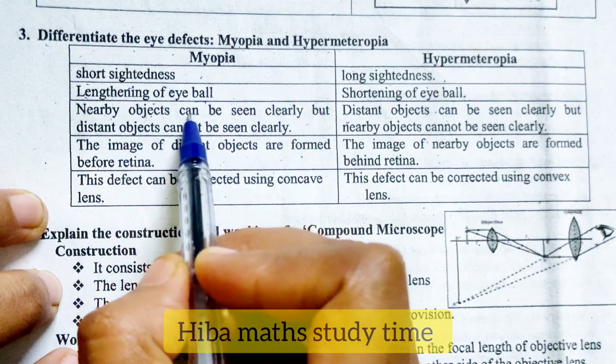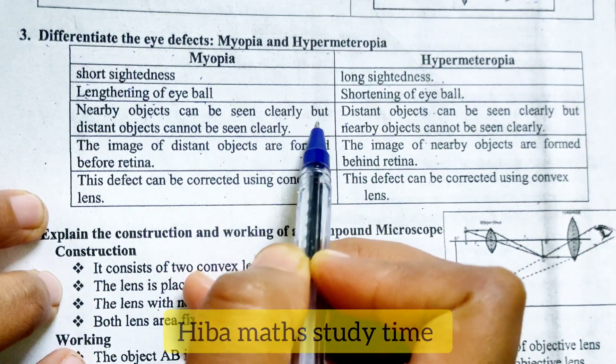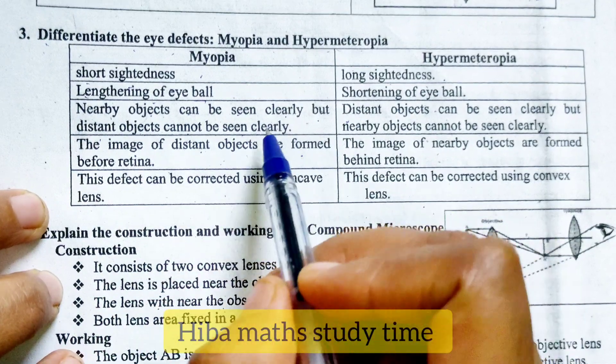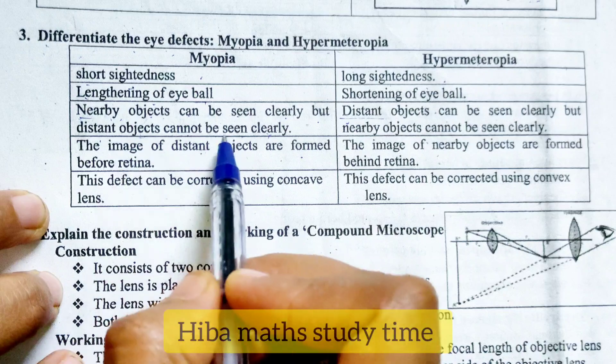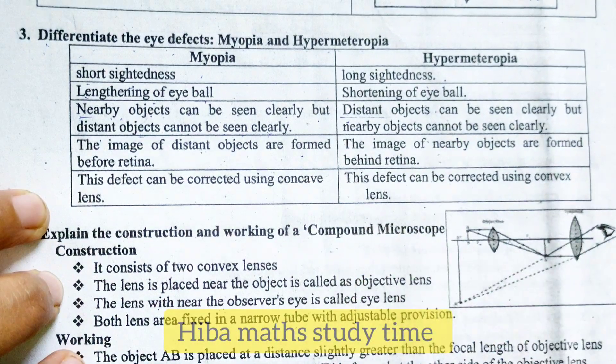Myopia: short sightedness. Nearby objects can be seen clearly, but distant objects cannot be seen clearly. We will need to change to distant.